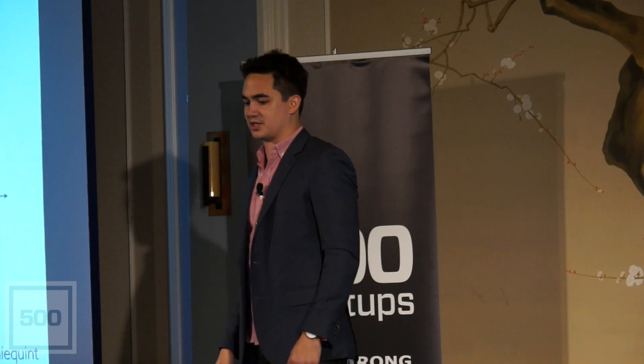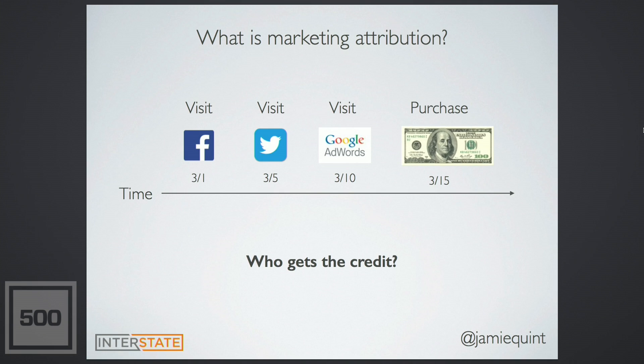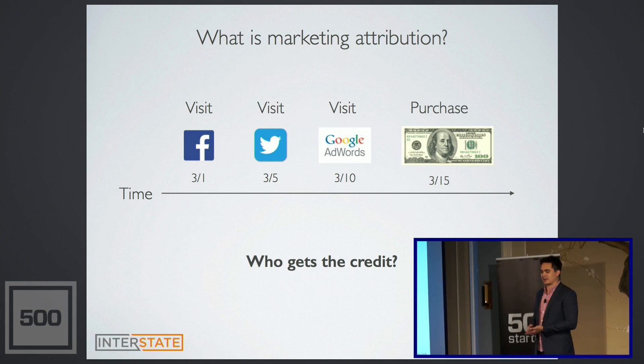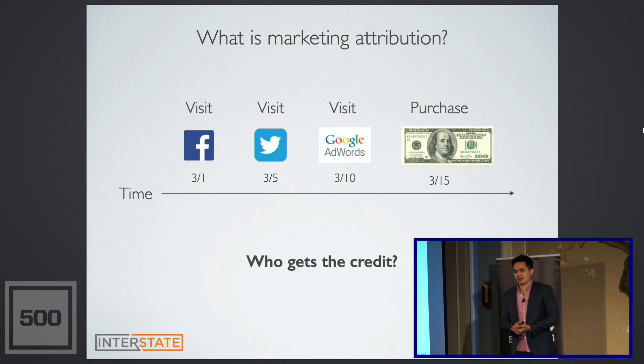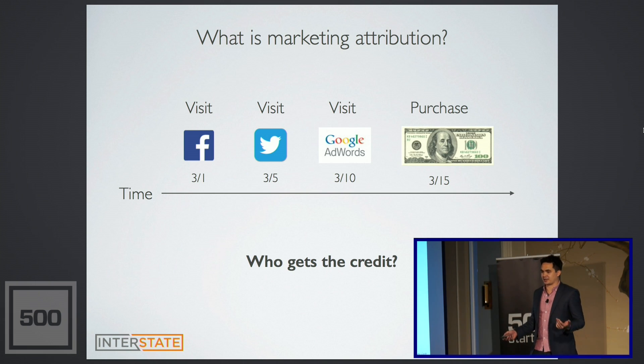The biggest thing with marketing attribution is just understanding this question: I have a bunch of clicks and then someone converts — either to an email sign-up or in this case to a purchase — and who gets the credit? It's a pretty complicated question.